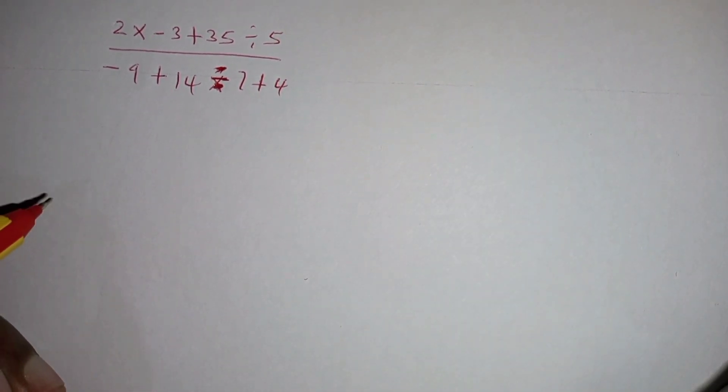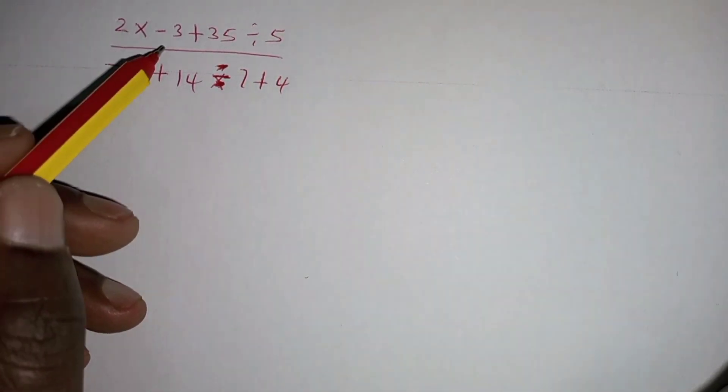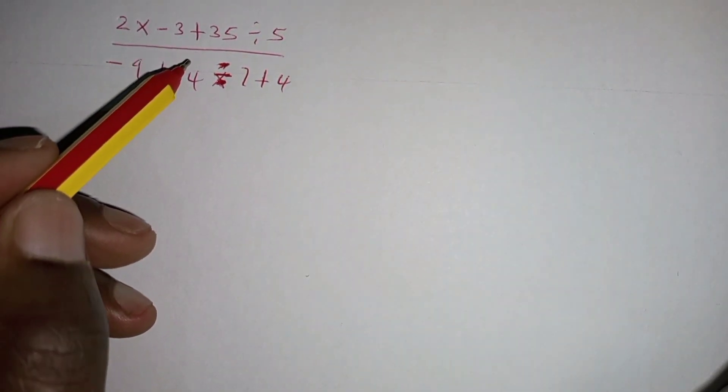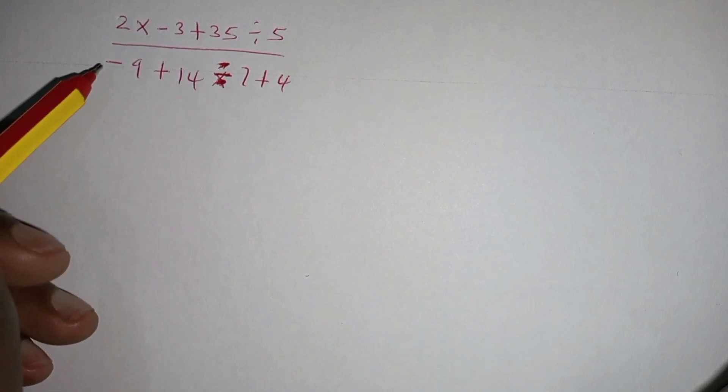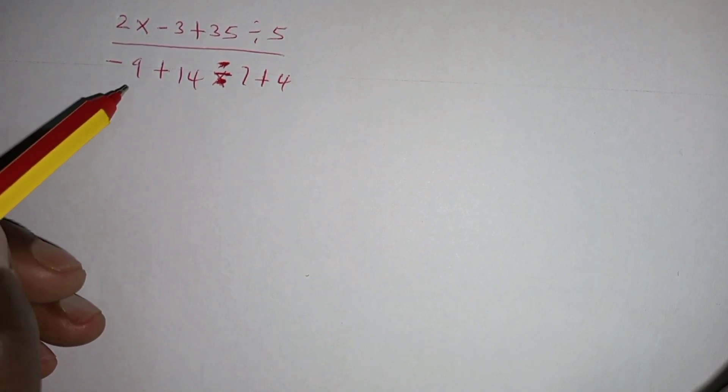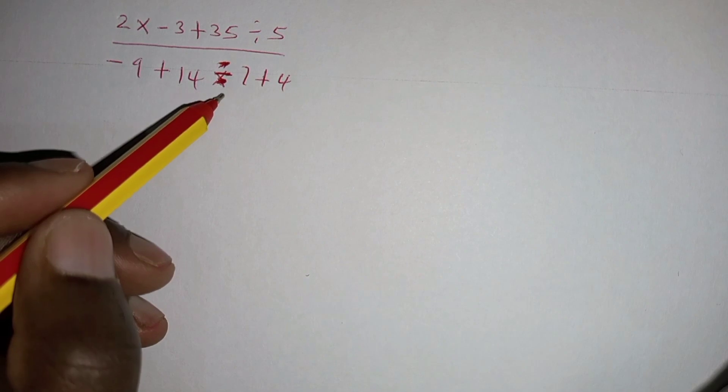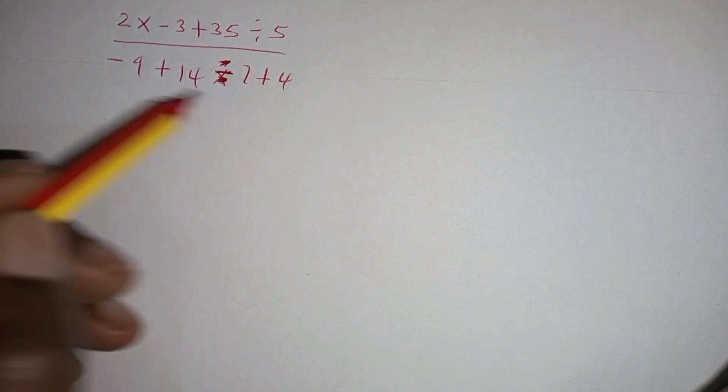So you have 2 times negative 3 plus 35 divided by 5, all over negative 9 plus 14 divided by 7 plus 4. So we begin by,